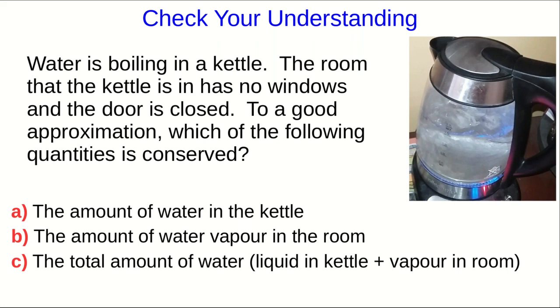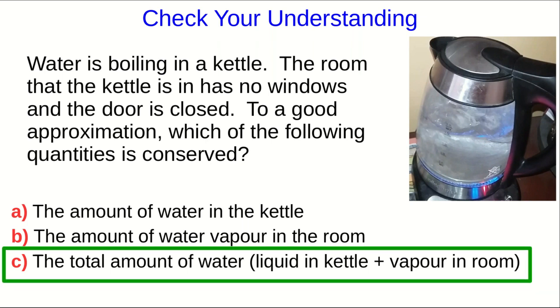Hello, welcome back, and hopefully you've answered this question from the previous part of the video. So, hopefully you realize that as the kettle boils, the amount of water in it is decreasing, so that's clearly not conserved, but that water that is leaving the kettle ends up as water vapor in the room, and so it's the total amount of water in the kettle and the room that's conserved.